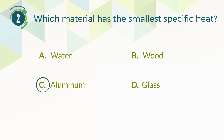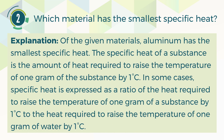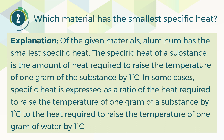The correct answer is C, aluminum. Of the given materials, aluminum has the smallest specific heat. The specific heat of a substance is the amount of heat required to raise the temperature of 1 gram of the substance by 1 degree Celsius. In some cases, specific heat is expressed as a ratio of the heat required to raise the temperature of 1 gram of a substance by 1 degree Celsius to the heat required to raise the temperature of 1 gram of water by 1 degree Celsius.